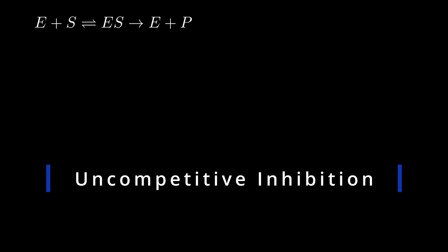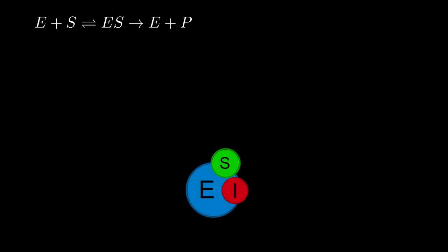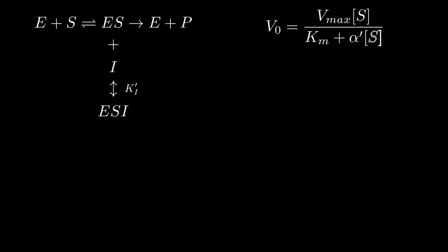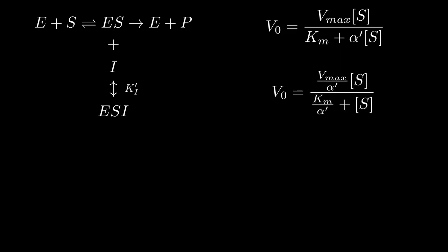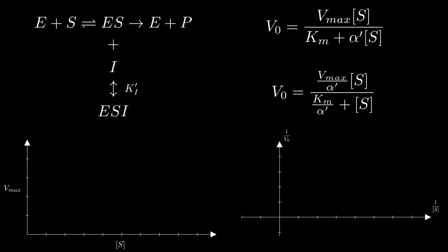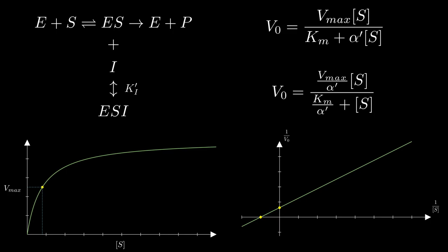Uncompetitive inhibition occurs when the inhibitor binds to the ES complex, which causes a conformational change such that the catalysis is blocked. The reaction scheme then becomes this. The uncompetitive inhibitor modifies the MM equation to look like this, where alpha prime is defined as 1 plus I concentration over Ki prime, with Ki prime being the association constant of the inhibitor to the enzyme-substrate complex. In this form, as we increase alpha prime, the apparent Vmax decreases. The apparent Km decreases as well. This lines up pretty well with our graphs.